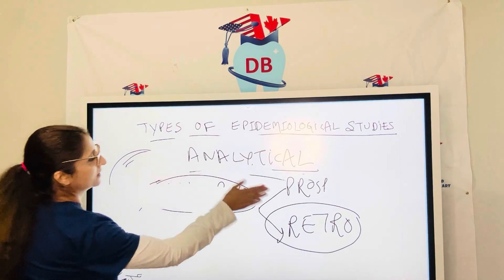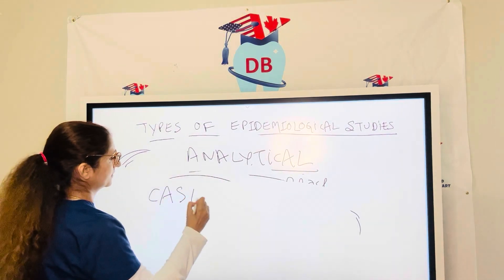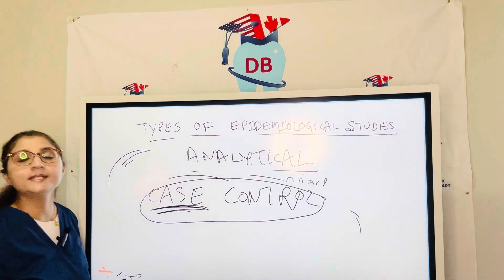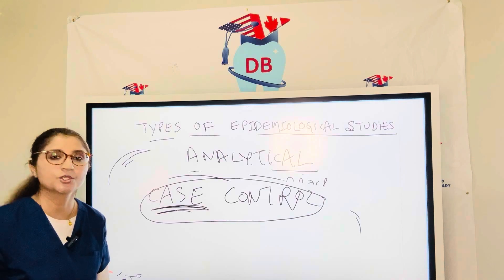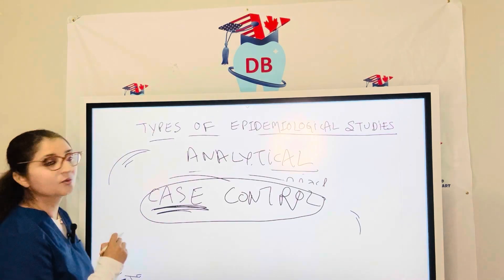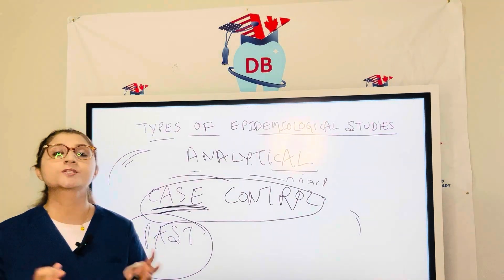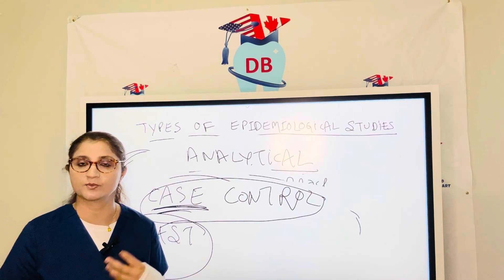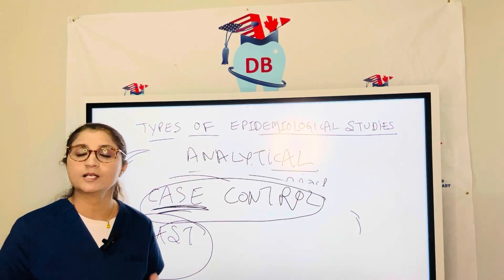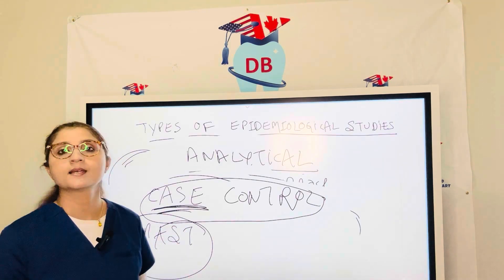The third type of analytical study is case control. In case control, remember, you already have a case — you already have a disease. You select 10 subjects: five of them are having cancer and five of them are not having cancer. In case control, we go into the past to see for how long they were smoking to develop the cancer today, and then we compare our results with the control group. When comparing case control, cross-sectional, and cohorts, the differences are very clear.